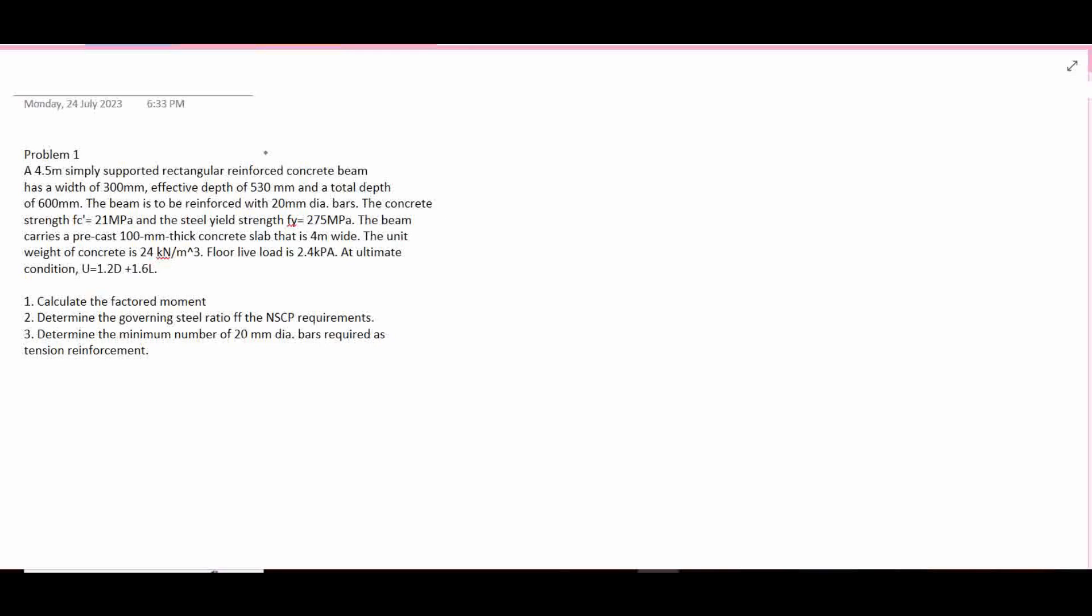The beam carries a precast 100 mm thick concrete slab that is 4 meter wide. The unit weight of concrete is 24 kN per cubic meter and the floor live load is 2.4 kPa. At ultimate condition, U equals 1.2 dead load plus 1.6 live load. The required are: calculate the factored moment, determine the governing steel ratio based on NSCP requirements, and determine the minimum number of 20 mm diameter bars required as tension reinforcement.